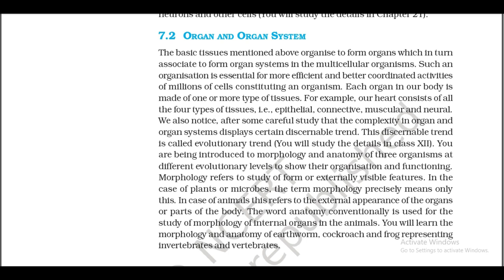7.2: Organ and Organ System. The basic tissues mentioned above organize to form organs, which in turn associate to form organ systems in multicellular organisms. Such organization is essential for more efficient and better coordinated activities of the millions of cells constituting an organism. Each organ in our body is made up of one or more types of tissues. For example, our heart consists of all four types of tissues: epithelial, connective, muscular, and neural. You will study the details in class 12. You are being introduced to morphology and anatomy of three organisms at different evolutionary levels to show their organization and functioning.